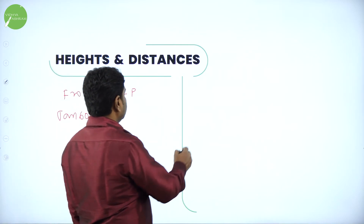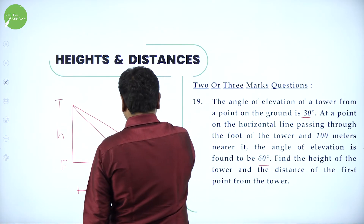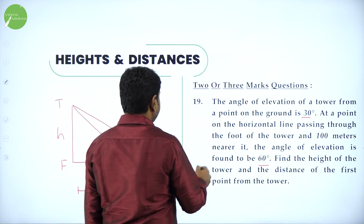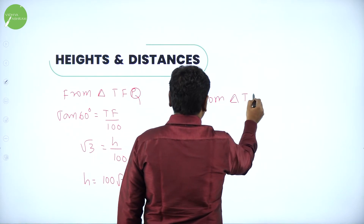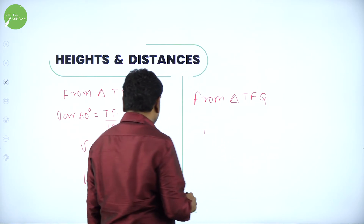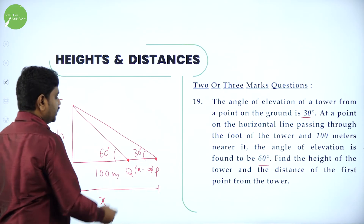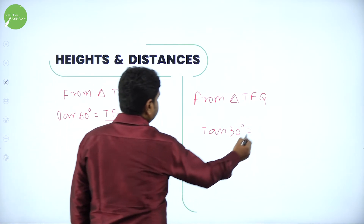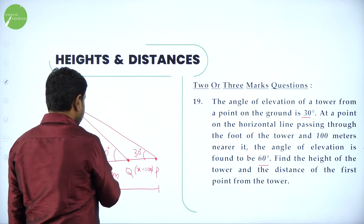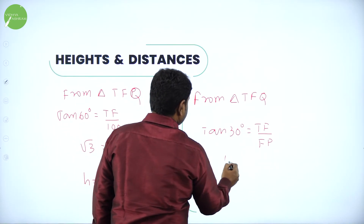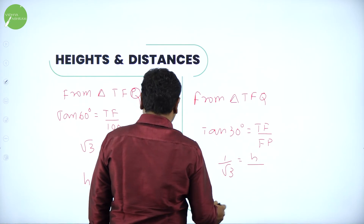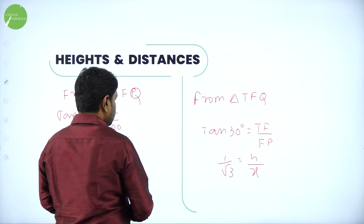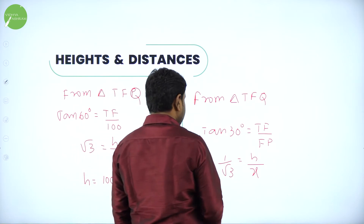Now take triangle TFP. Tan 30 degrees equals TF divided by FP. Tan 30 is 1 over root 3, TF is height H and FP is x. So 1 over root 3 equals H over x. Rearranging, x equals root 3 times H.